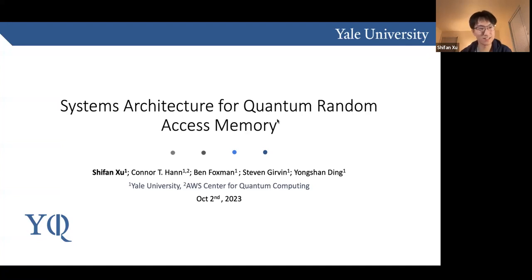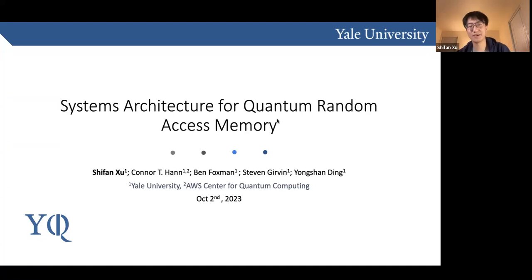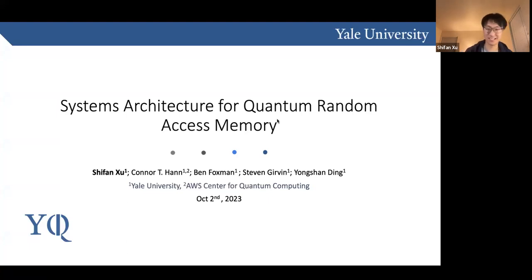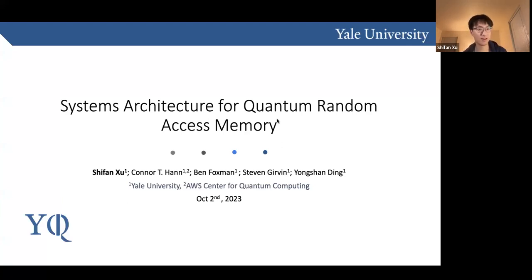Thanks for inviting me. I'm very glad to chat with you about my research today. We will go into a topic called systems architecture for quantum random access memory, which we'll call Q-RAM. Classical random access memory should be very familiar to everyone — it's been extensively studied. However, the quantum version has been largely neglected. Today I'll show how to design the architecture for Q-RAM.